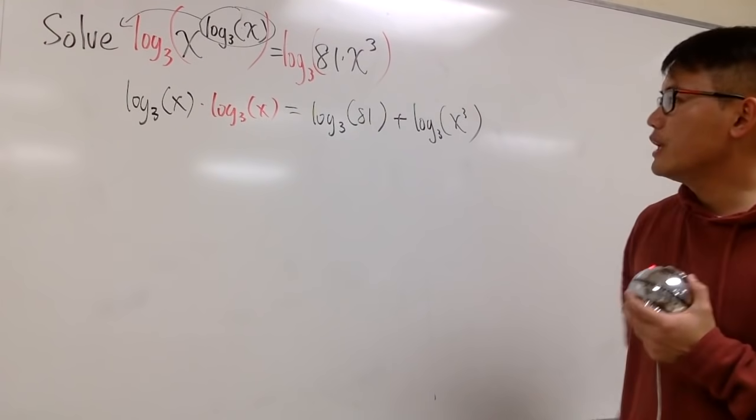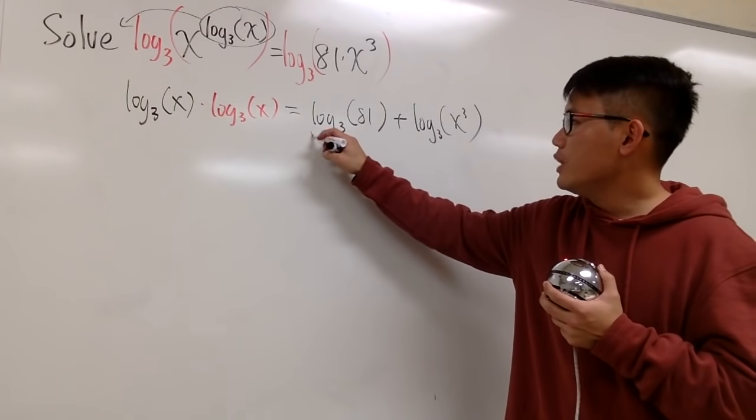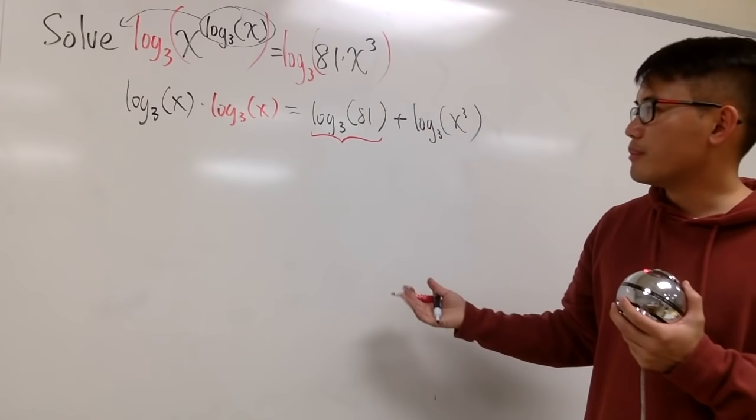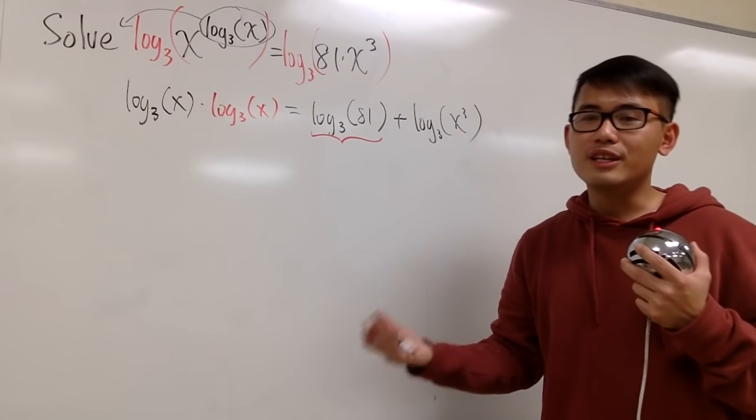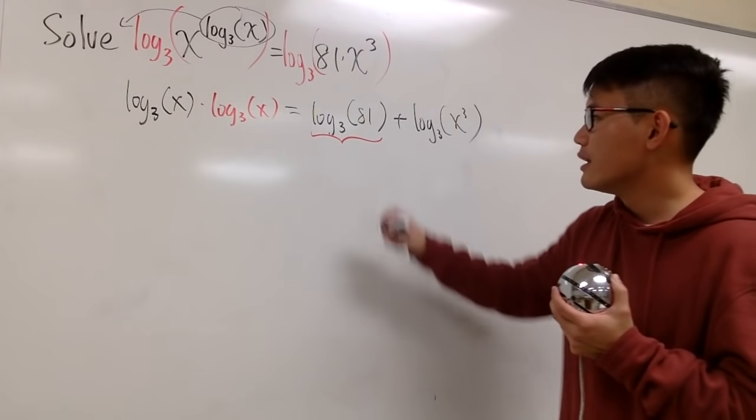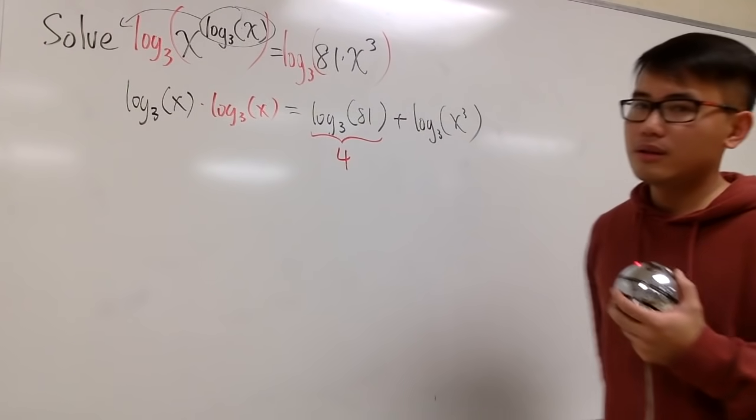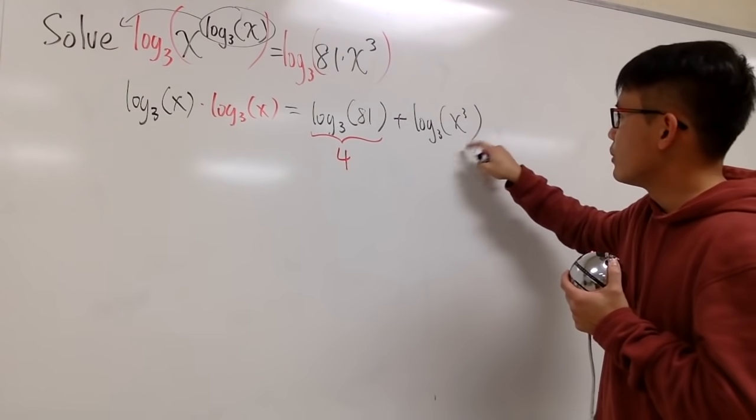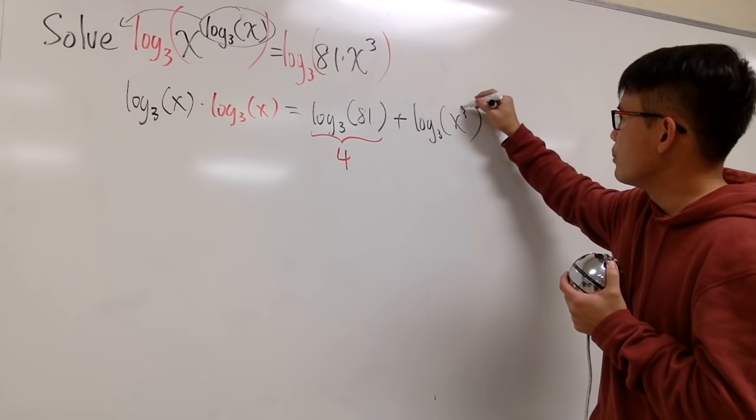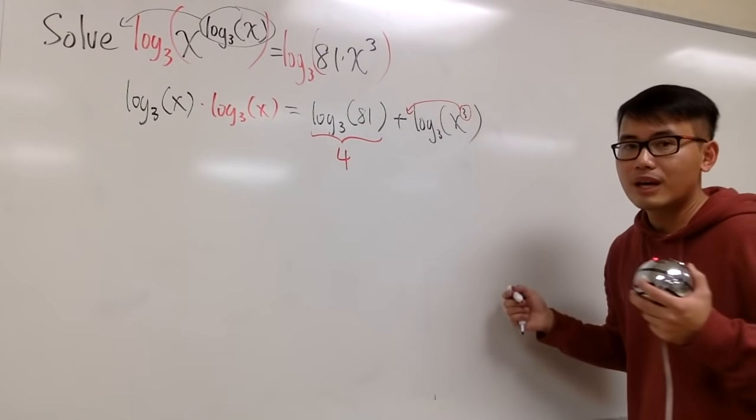Now, what can we do next? Here we know this is just a regular number, log base 3 of 81. You ask yourself, 3 to what power is 81? 3 to the fourth power is 81. So we know this is going to be a 4. Now we have to work on this. We can bring the power 3 right here and bring that to the front.